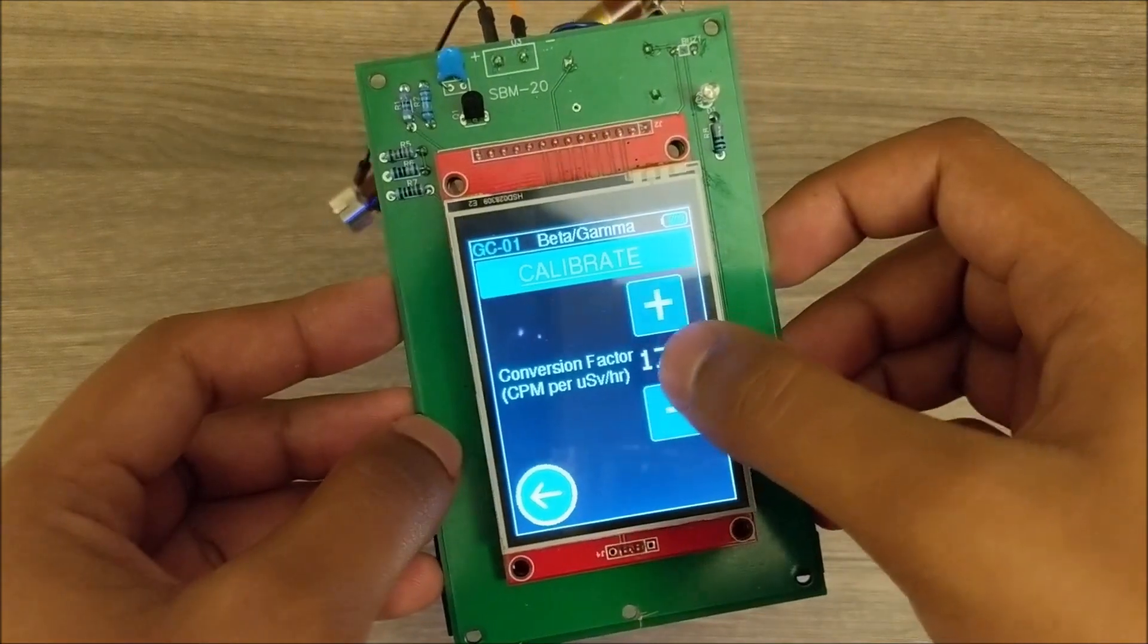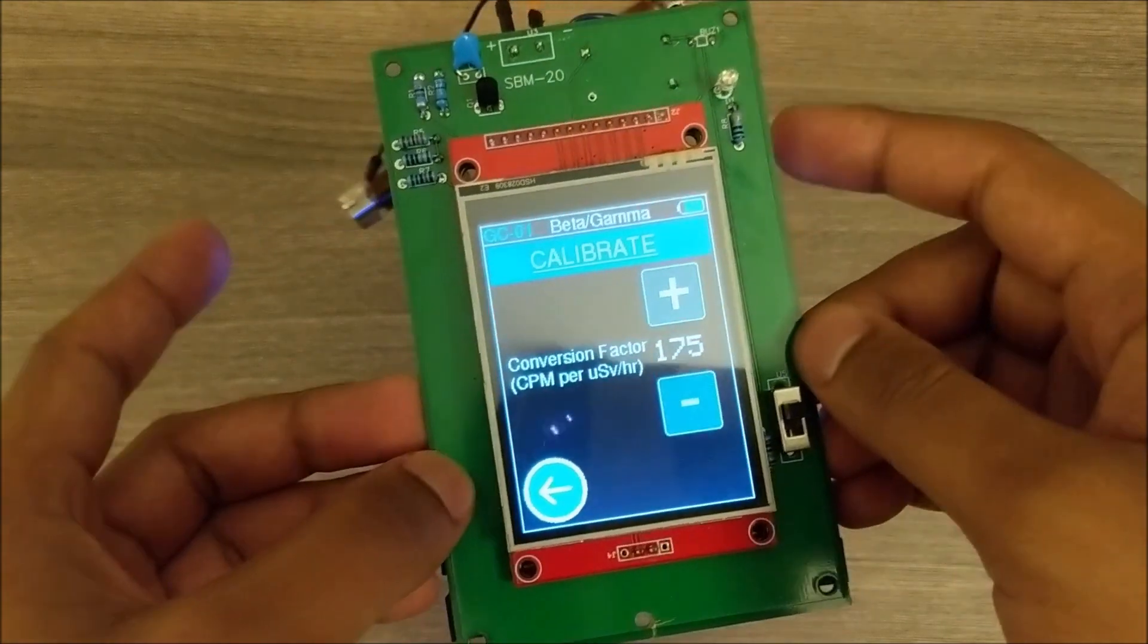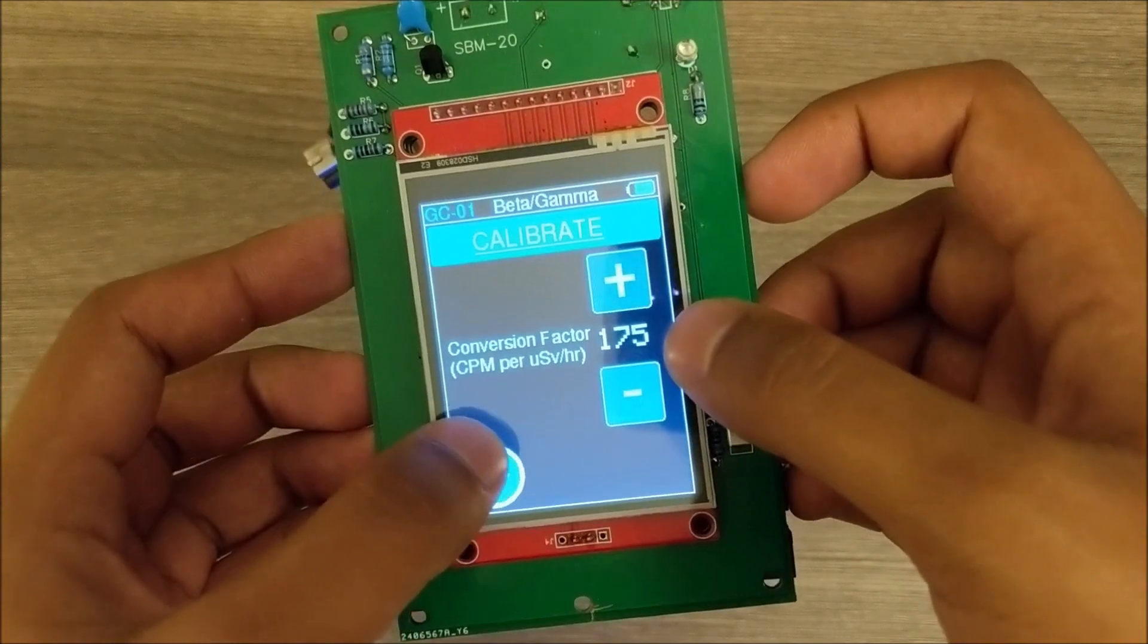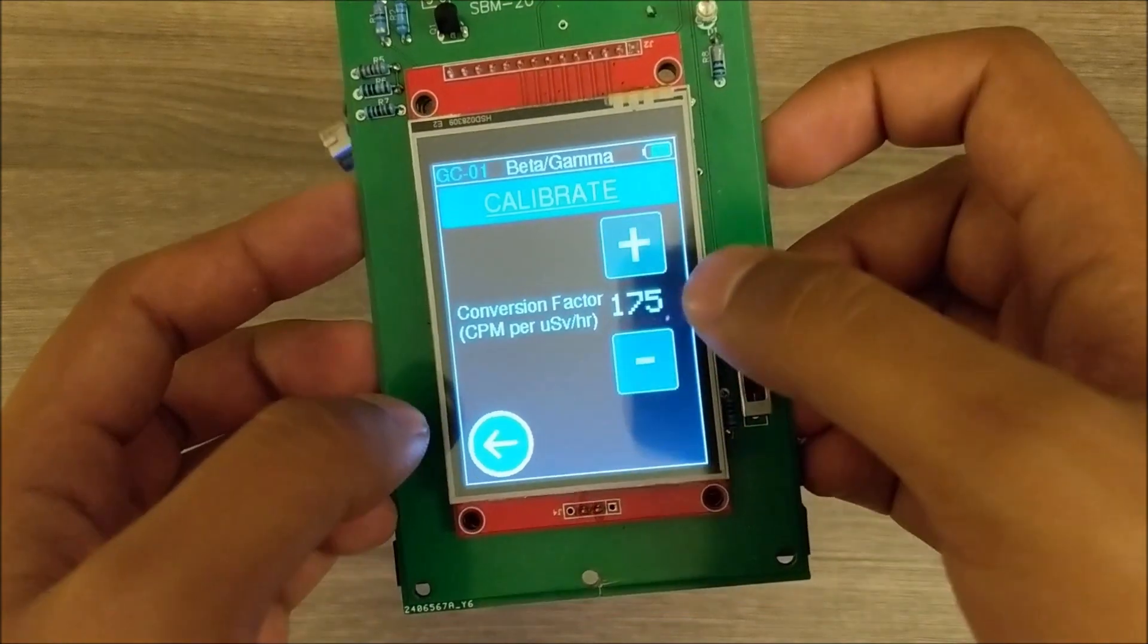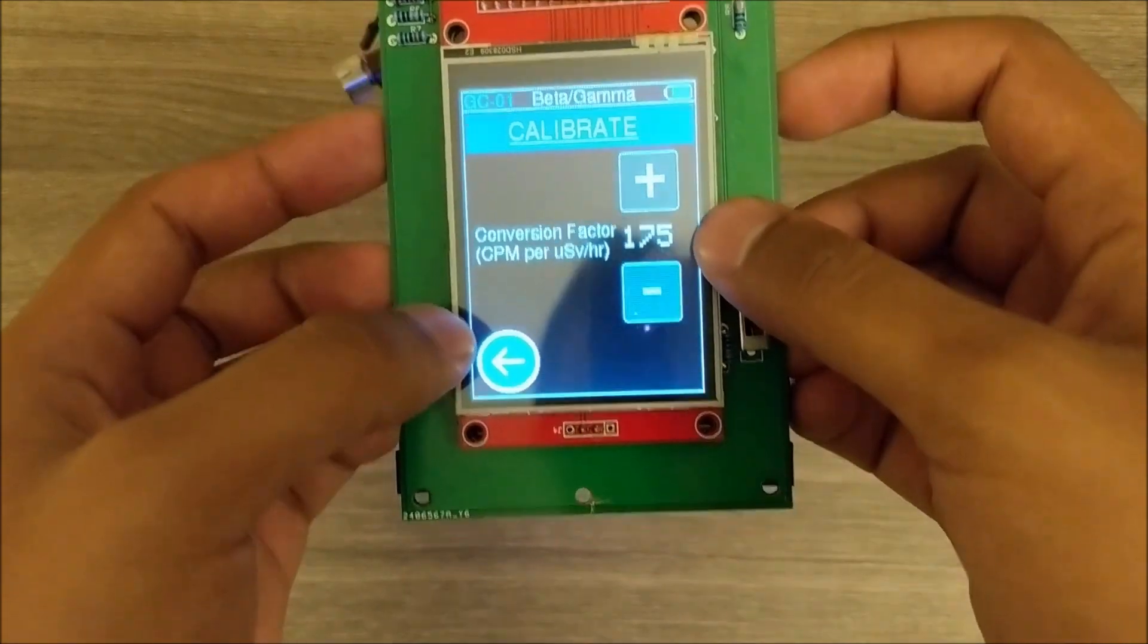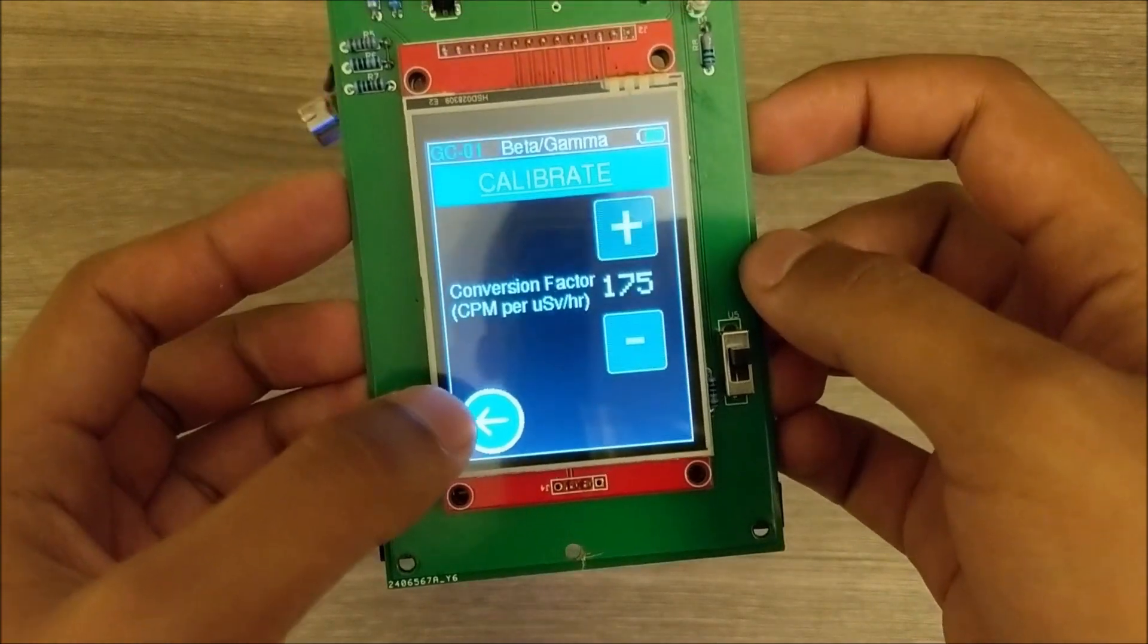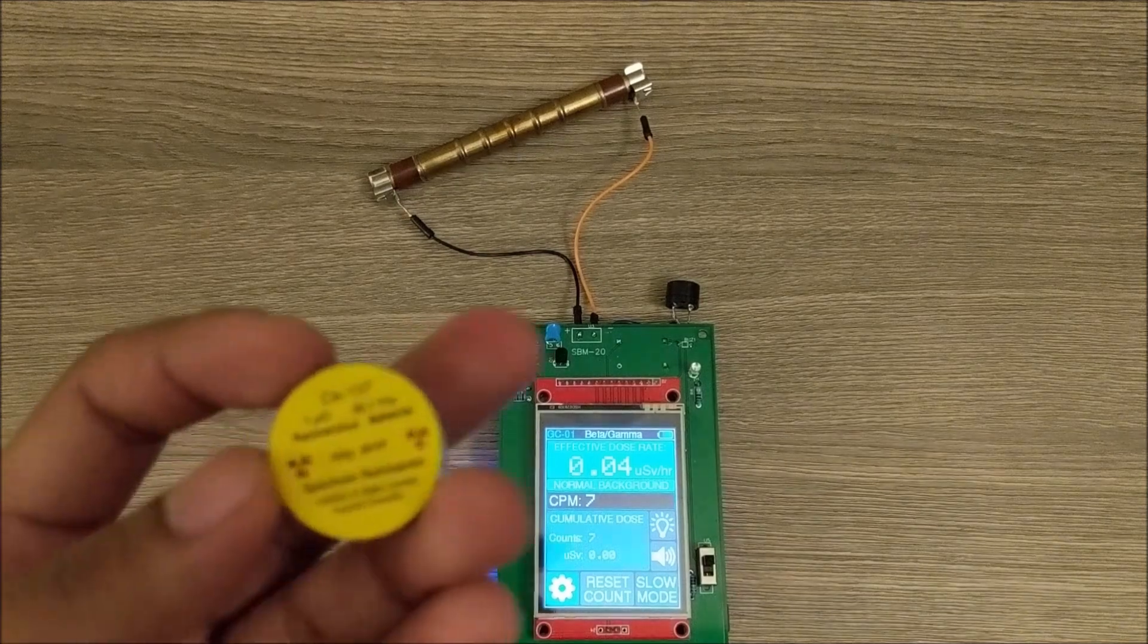The conversion factor relates the counts per minute, which is the raw reading of the Geiger counter, into dose units in microsieverts per hour. Right now I'm just using 175 counts per minute per microsievert per hour. That's just something I found online, but it does vary. I've seen factors as low as 120 to as high as 200, so I just want to find out what it is for cesium-137.